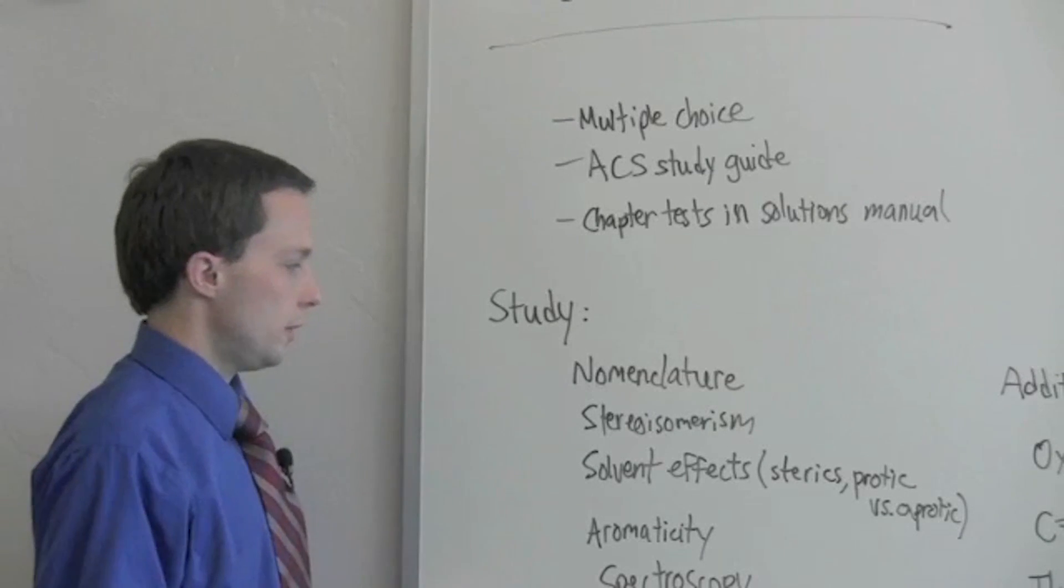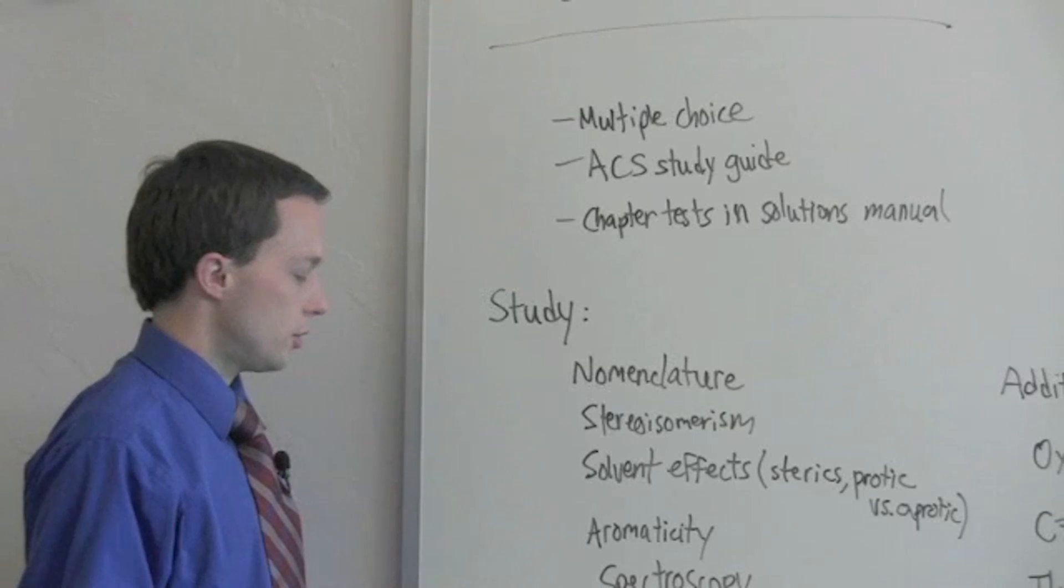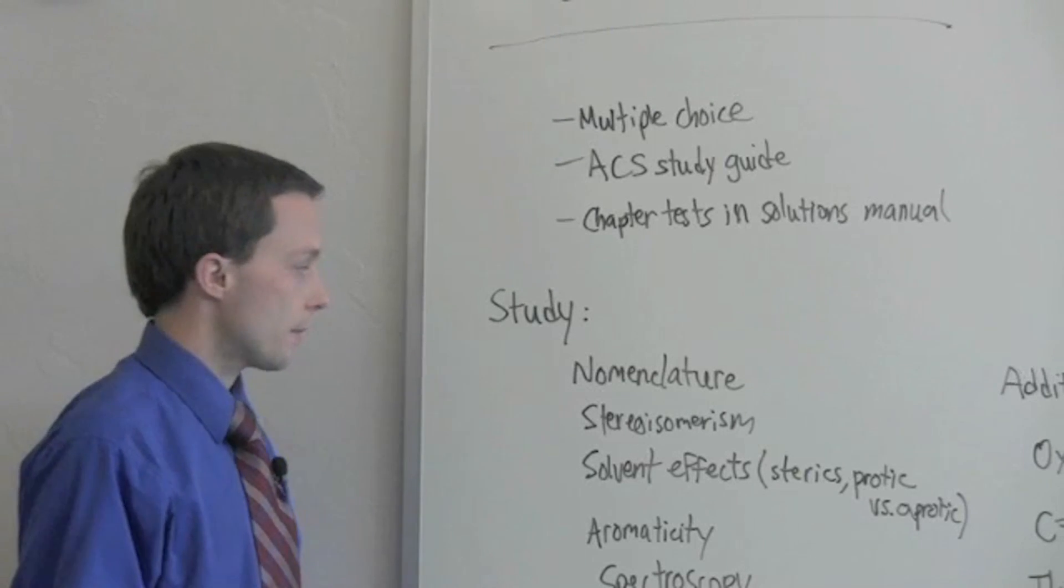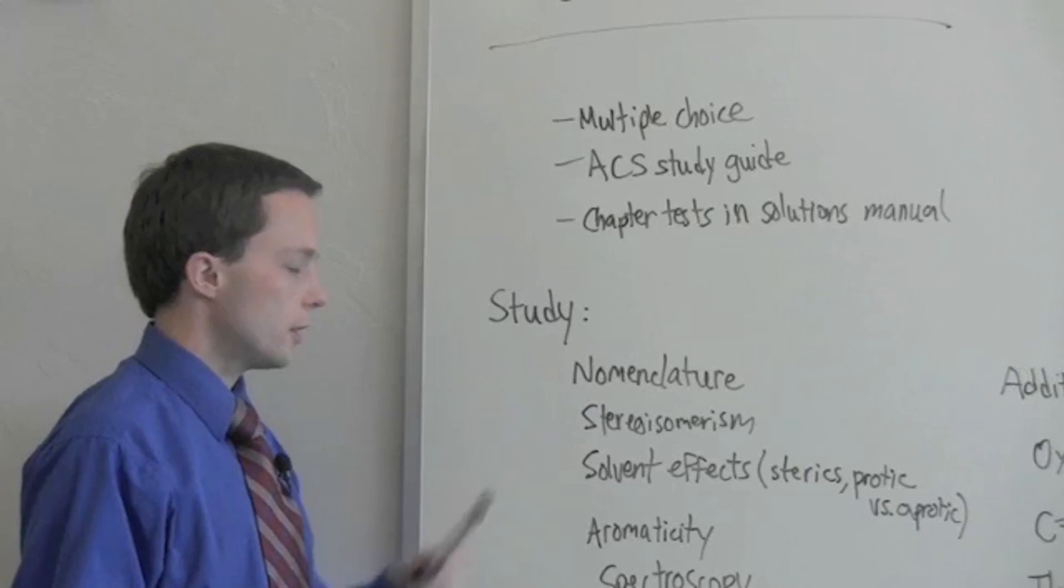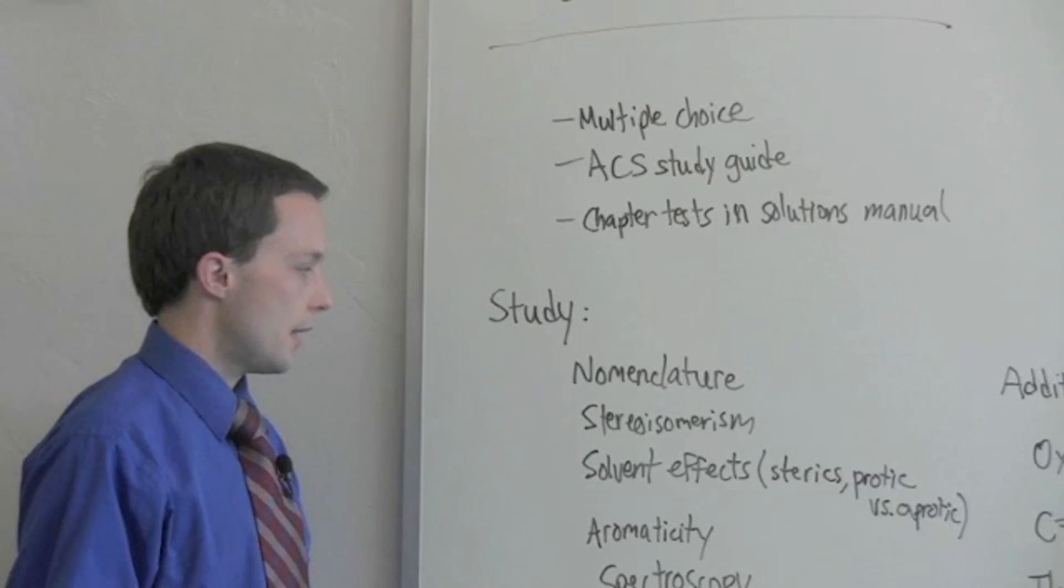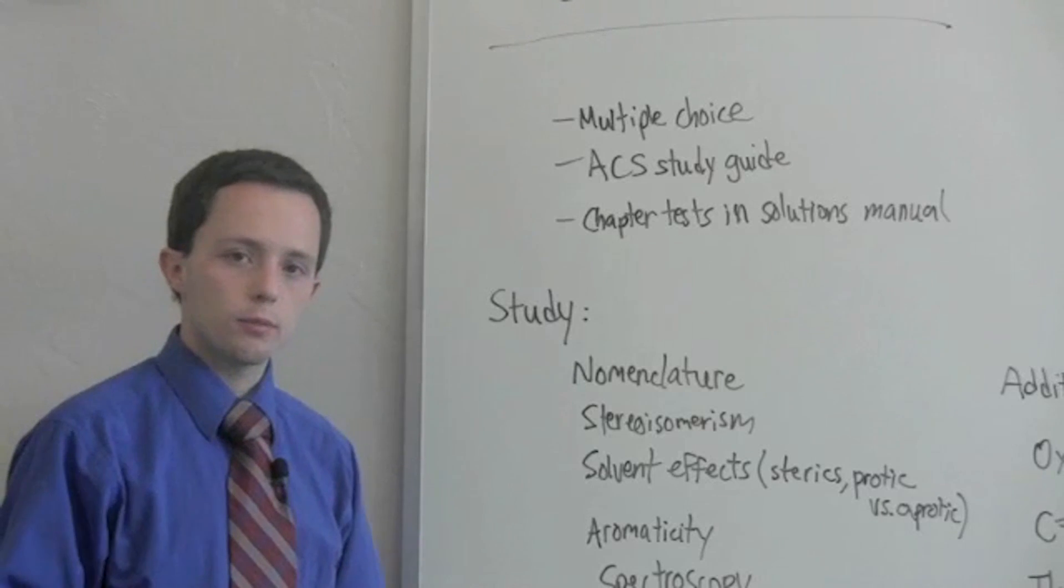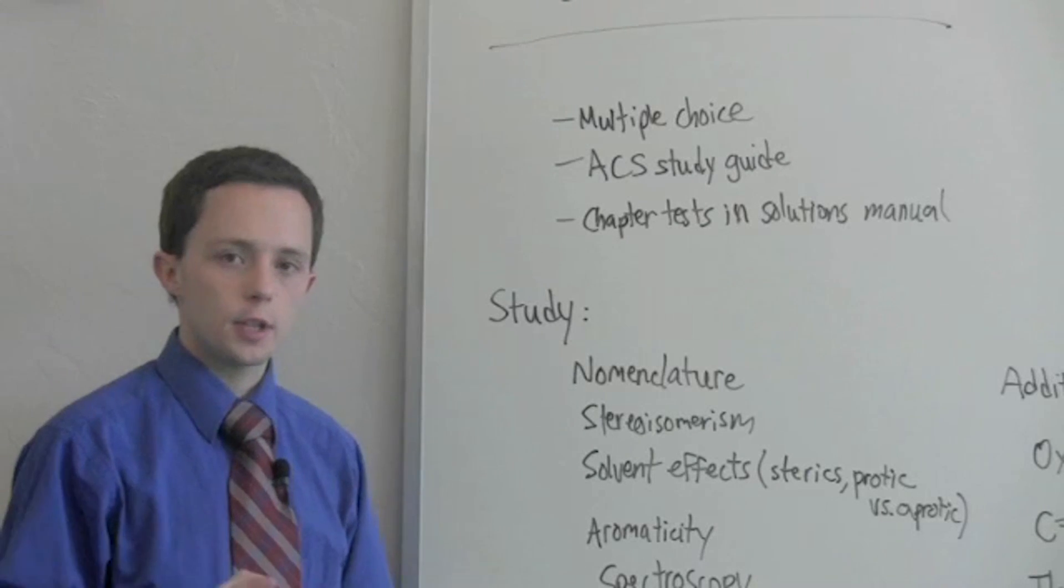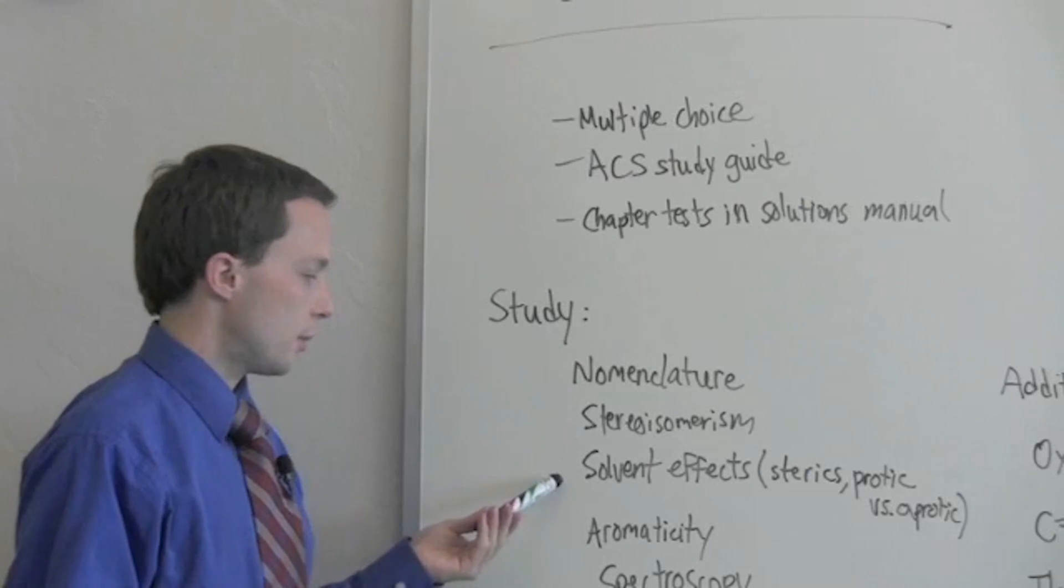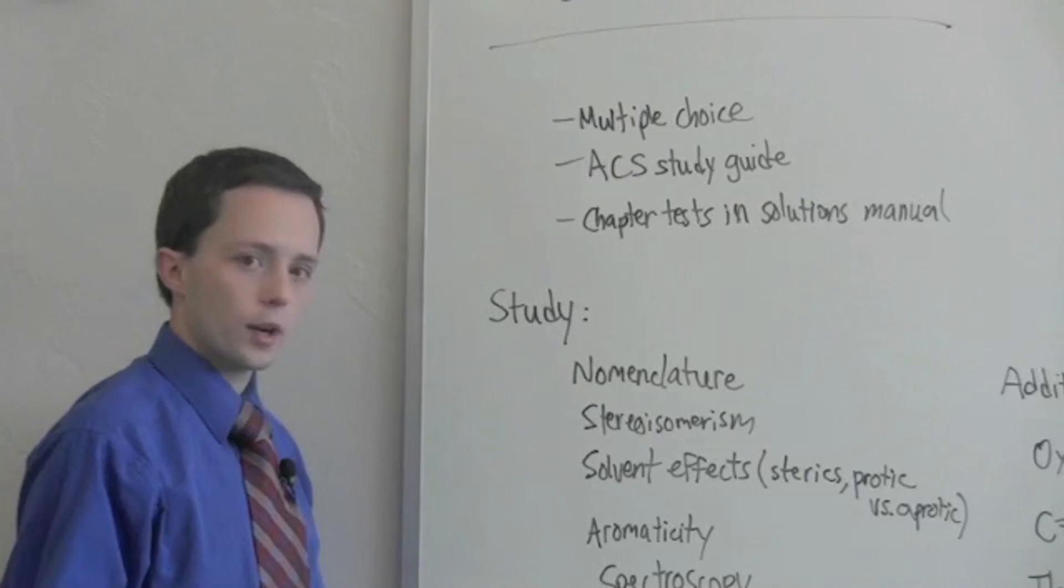Here are some of the concepts that you should be familiar with and that you should be prepared to answer questions on for the ACS final. Of course, nomenclature, stereoisomerism, and a lot of that is what you covered in the first half of organic chemistry. Solvent effects is an important part, and that was also in the first half of organic chemistry.